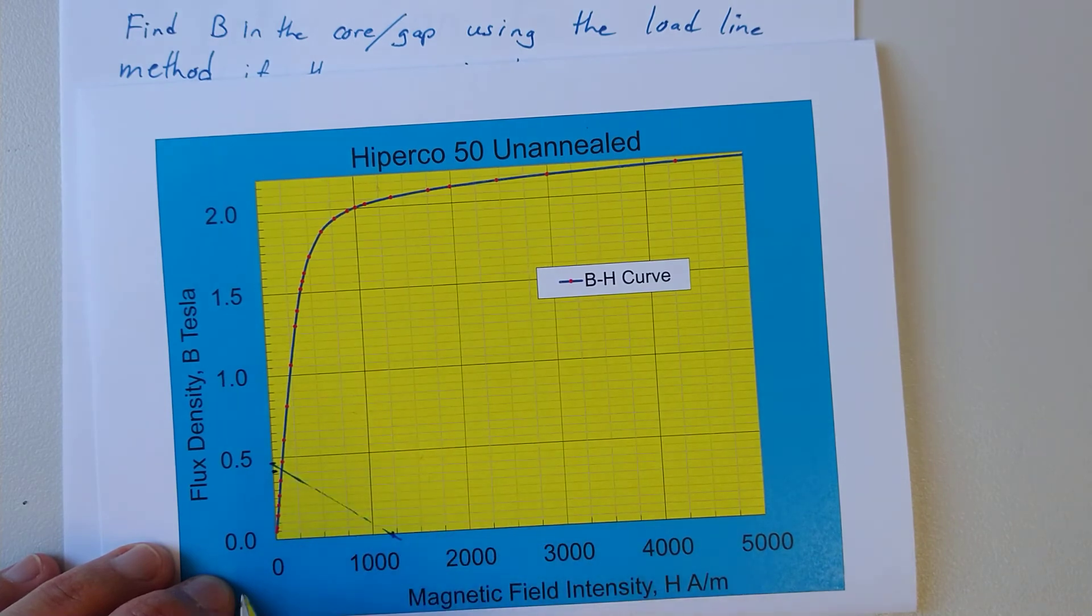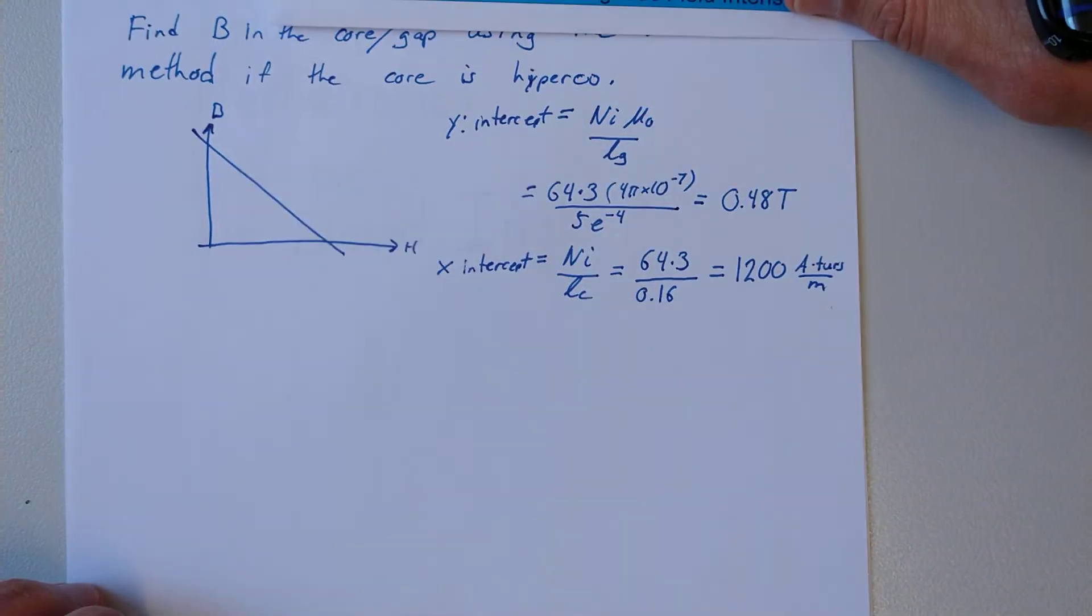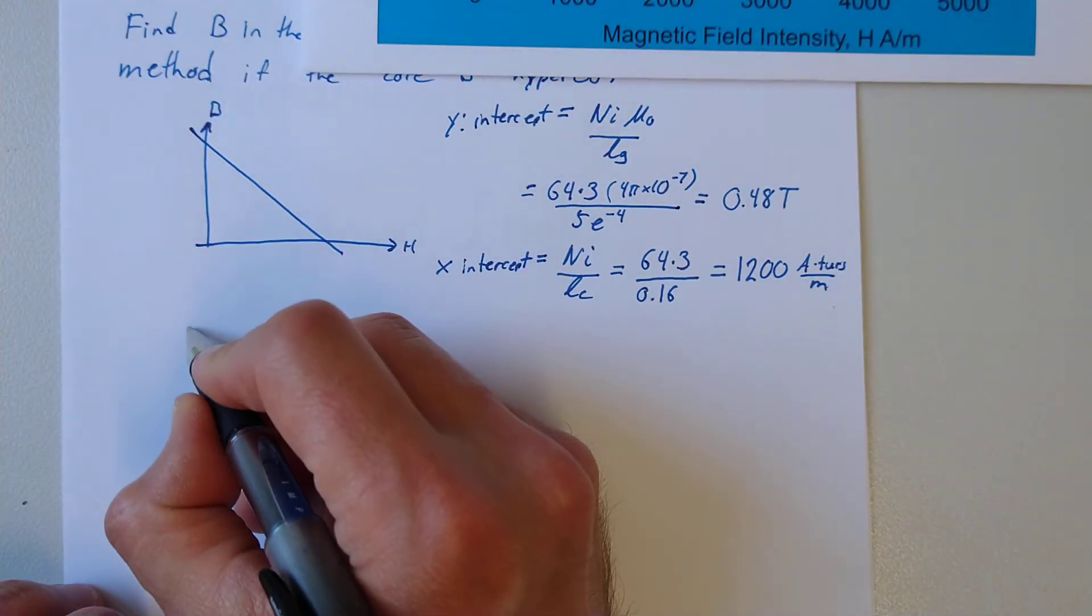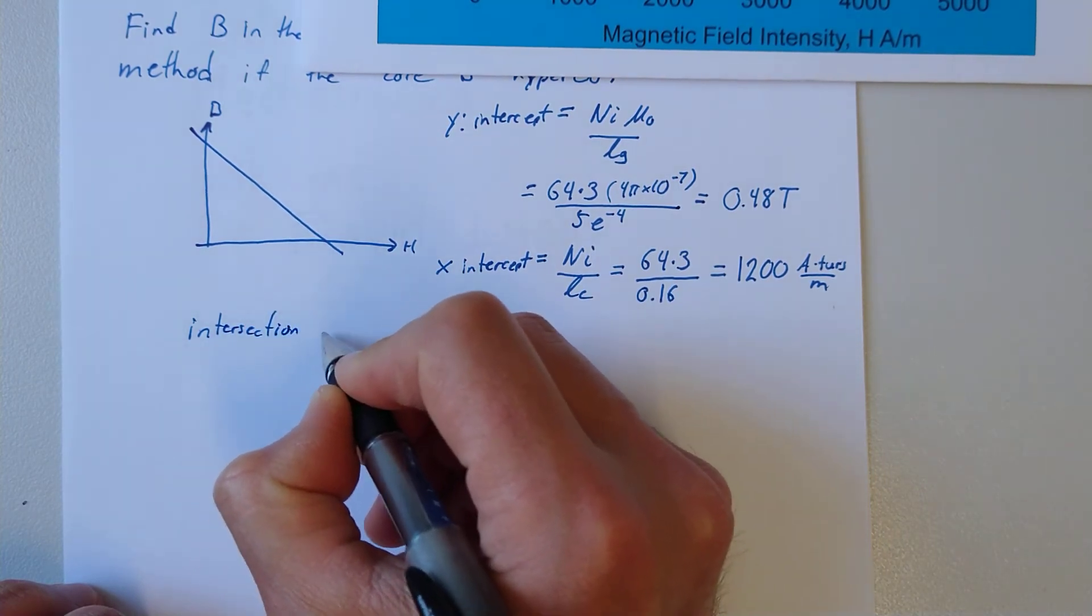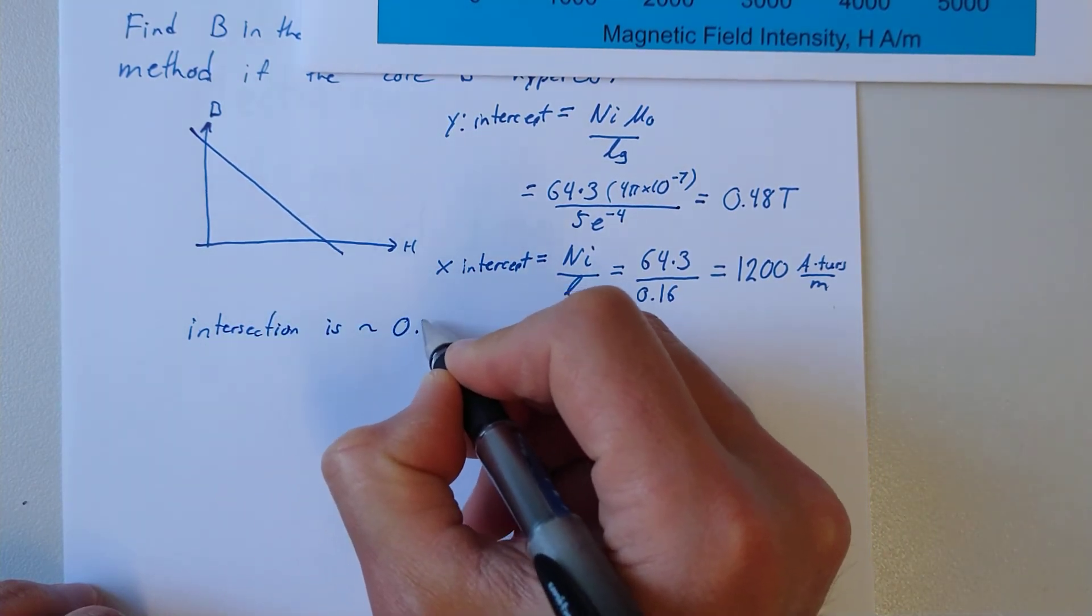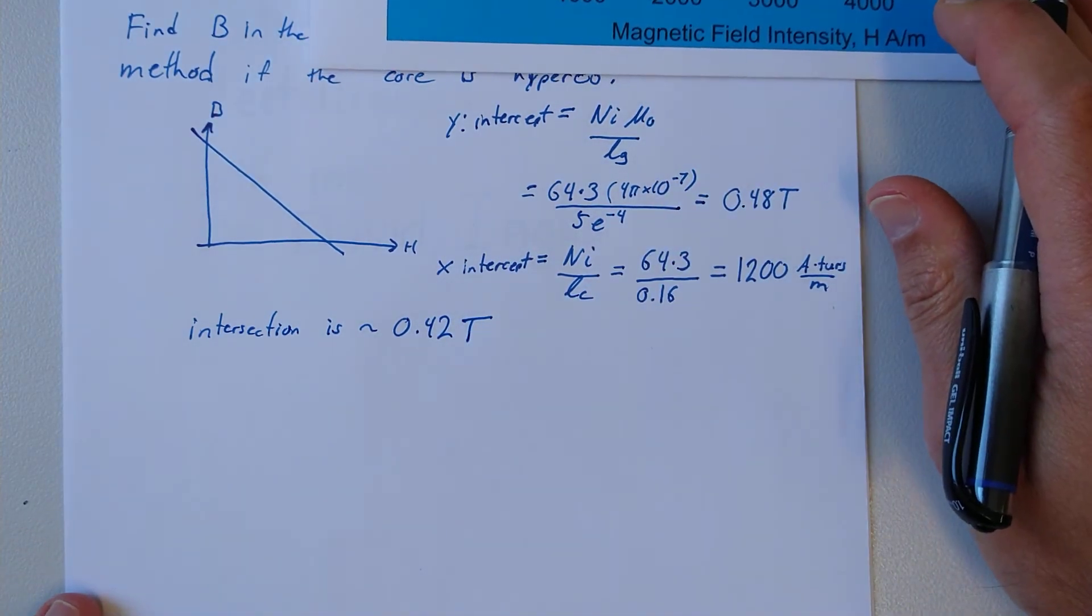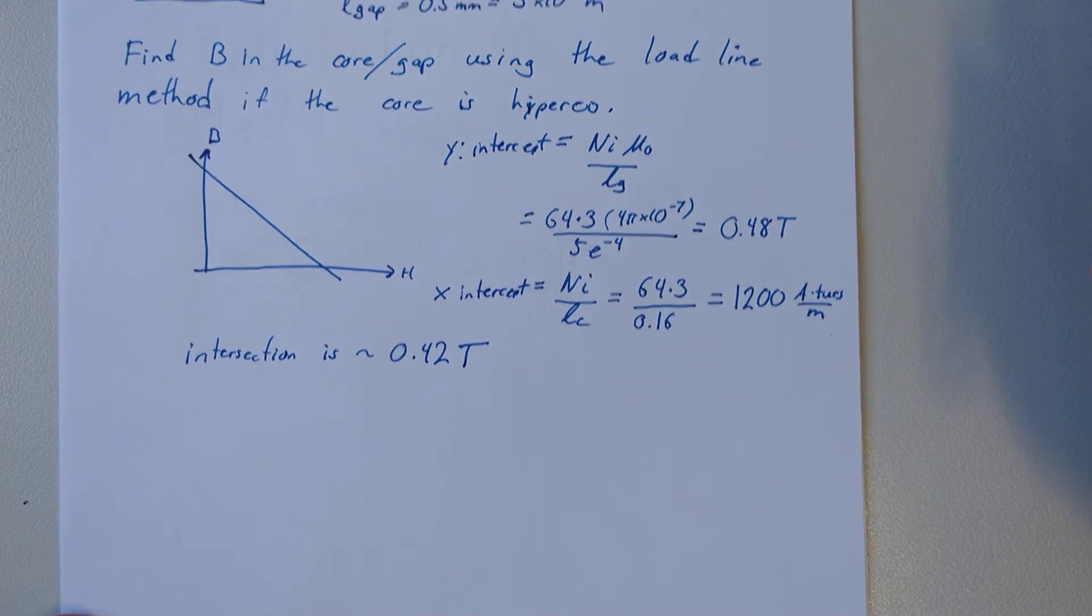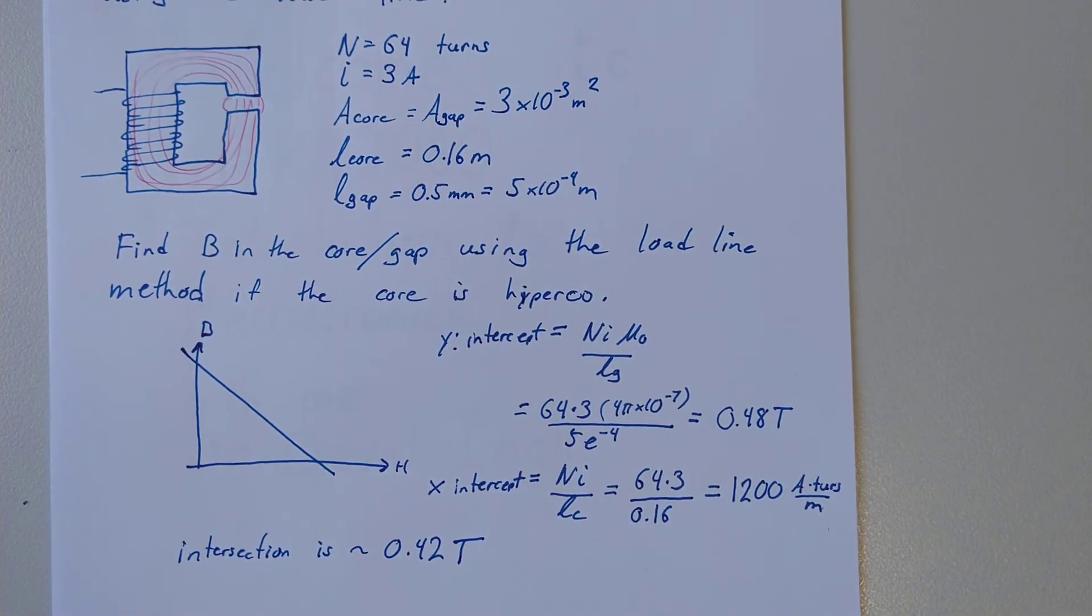That was 0.48. We get an operating point around... if we do this on a computer which we can blow it up, we'll get a slightly more precise answer. But the intersection is approximately 0.42 Tesla. So that's it. If you can get these numbers for this type of problem, it's pretty straightforward.